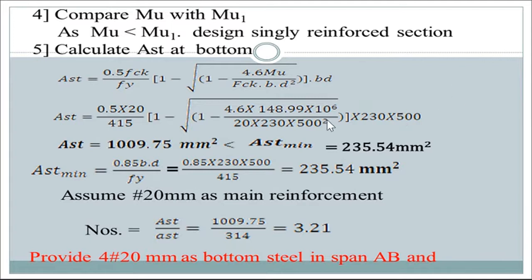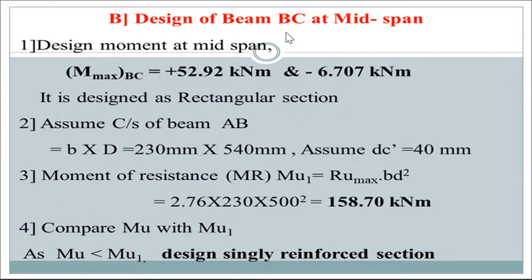AST required at mid-span = 1009.75 mm², which is greater than AST minimum = 0.85BD/Fy = 235.54 mm². Using 20 mm diameter bars, number of bars = AST required / area of one bar = 3.21, so provide 4 bars of 20 mm at bottom in span AB. For mid-span of BC, the two bending moments are: from Case 1, negative 6.707 kNm; from Case 2, positive 55.92 kNm.